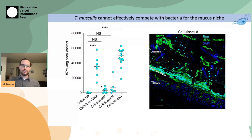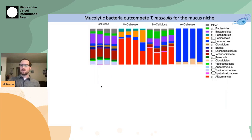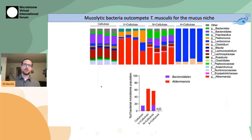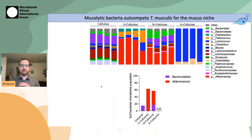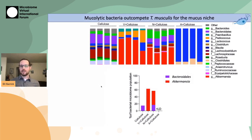To identify the bacteria out-competing T. musculus for mucus, I performed 16S sequencing on those mice. I'd like to draw attention to two bacterial groups in this data: the Bacteroidales, which are known generalists that can eat both fiber and mucus, and Akkermansia, which contains Akkermansia muciniphila, a known mucus eater. The Bacteroidales and/or Akkermansia are extremely abundant in every condition where T. musculus is depleted, and are below the limit of detection only in the condition where T. musculus is rescued with ampicillin treatment. This highly suggests that Bacteroidales and/or Akkermansia out-compete T. musculus for the mucus niche during fiber starvation.